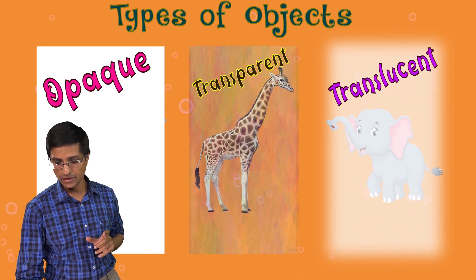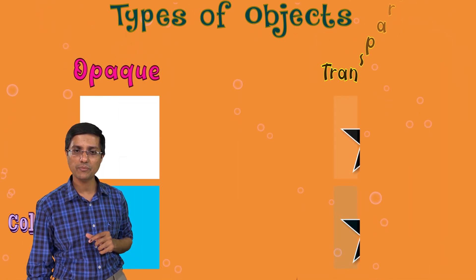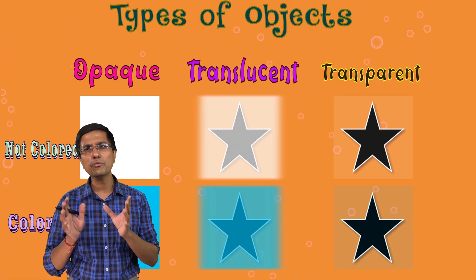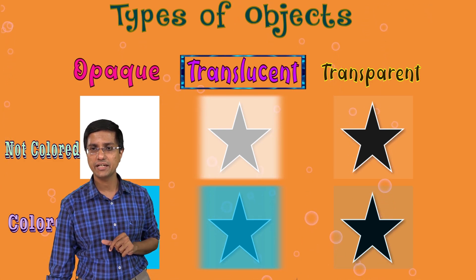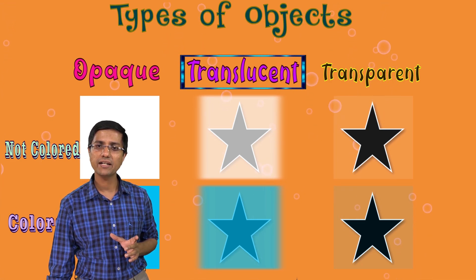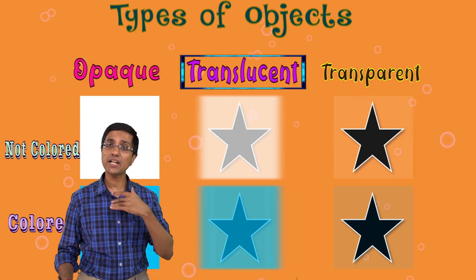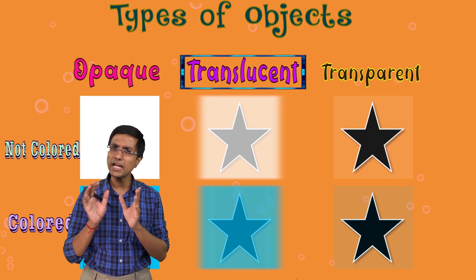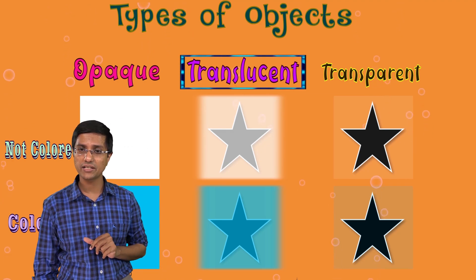Translucent objects, on the other hand, do this kind of scattering. Light enters and the light which comes out is really scattered. So what is on the other side, I would only be able to sort of make out its outline. They can be clear or colored. In case of translucent, if there is a star placed on the other side, I would only be able to slightly make out what's on the other side. I would not be able to see it clearly — it would be fuzzy. So that is known as translucent.